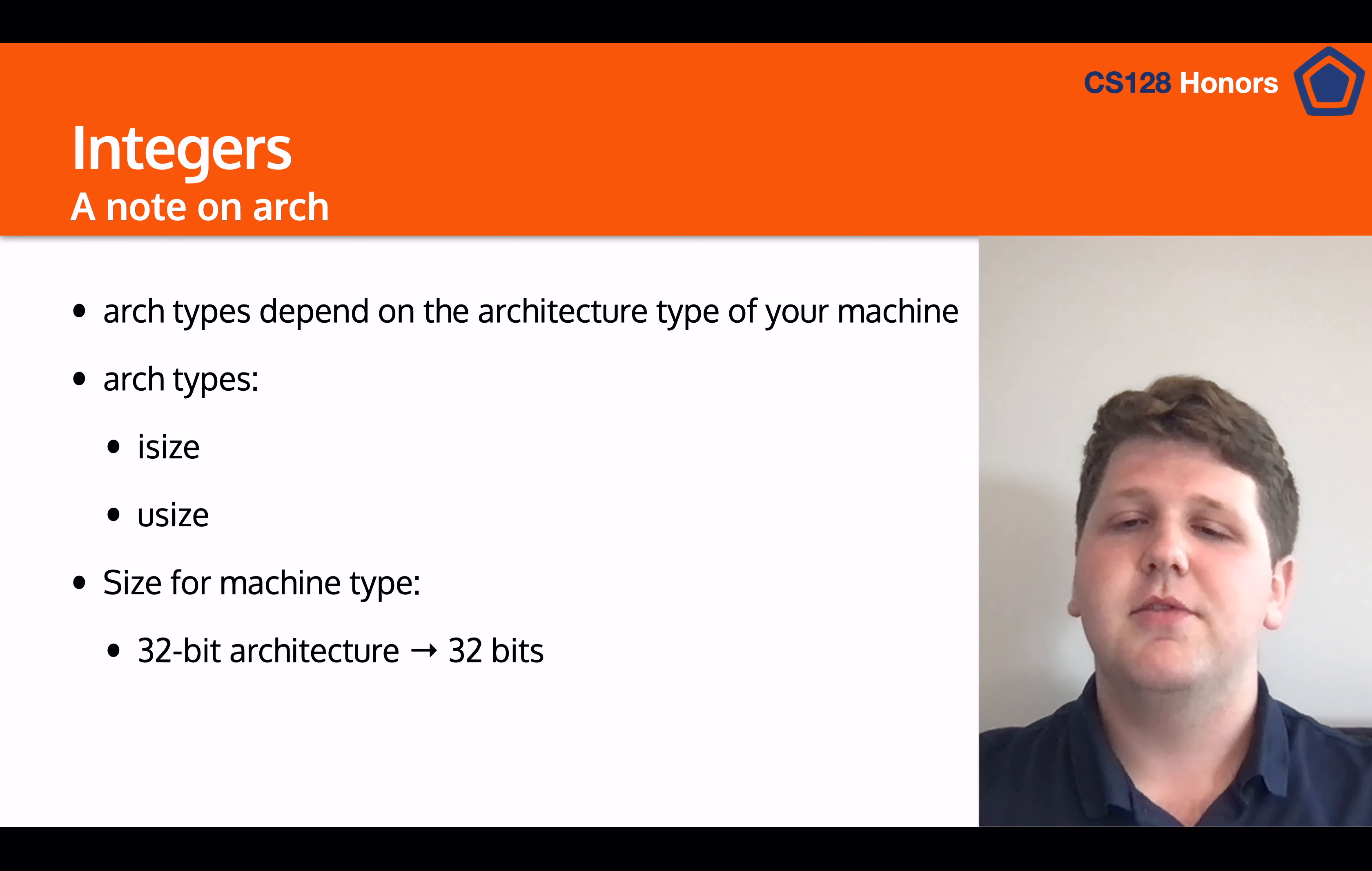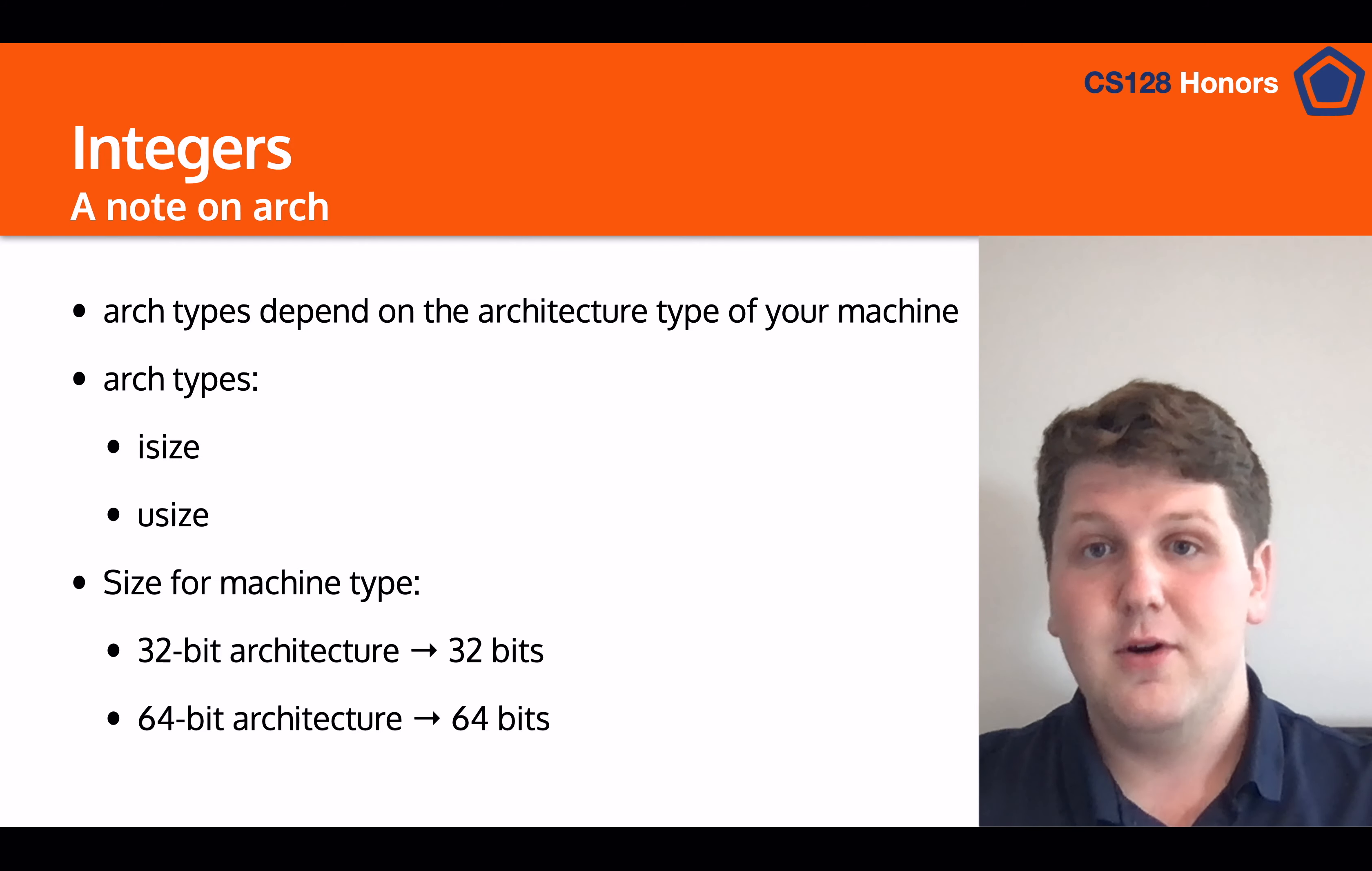And there are usually two types for most major computers nowadays. 32-bit architecture, which is for older computers, which has 32 bits for each integer, or 64-bit architectures, which will have 64 bits for each integer.